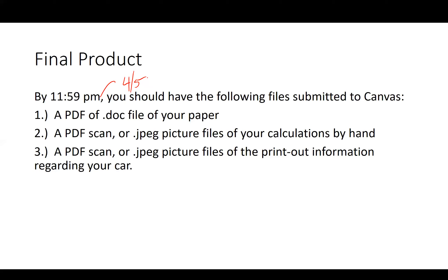Second, submit a PDF or scan of JPEG picture files of your calculations by hand. When you submit picture files, make sure they're not HEIC files — I can't read those and there's no way to convert them. Make sure you're submitting JPEG files. You should also submit a PDF scan or JPEG picture files of the printout information regarding your car. You don't have to physically print it — you can print to PDF and submit that.